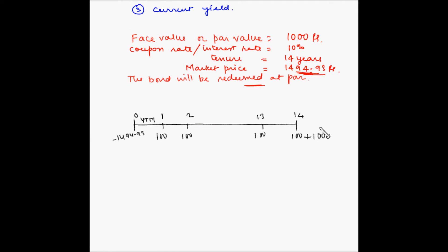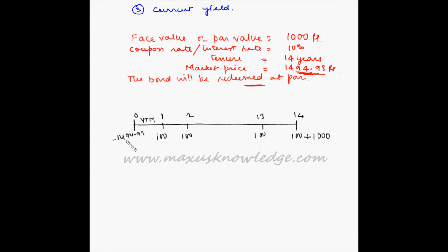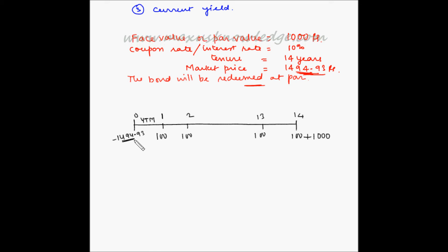At the end of the tenure the investor will also get back the maturity value which is 1000 rupees. The market price of the bond, which the investor will have to pay to buy the bond, is 1494.93 rupees. We have to find out the yield to maturity or the rate of return.